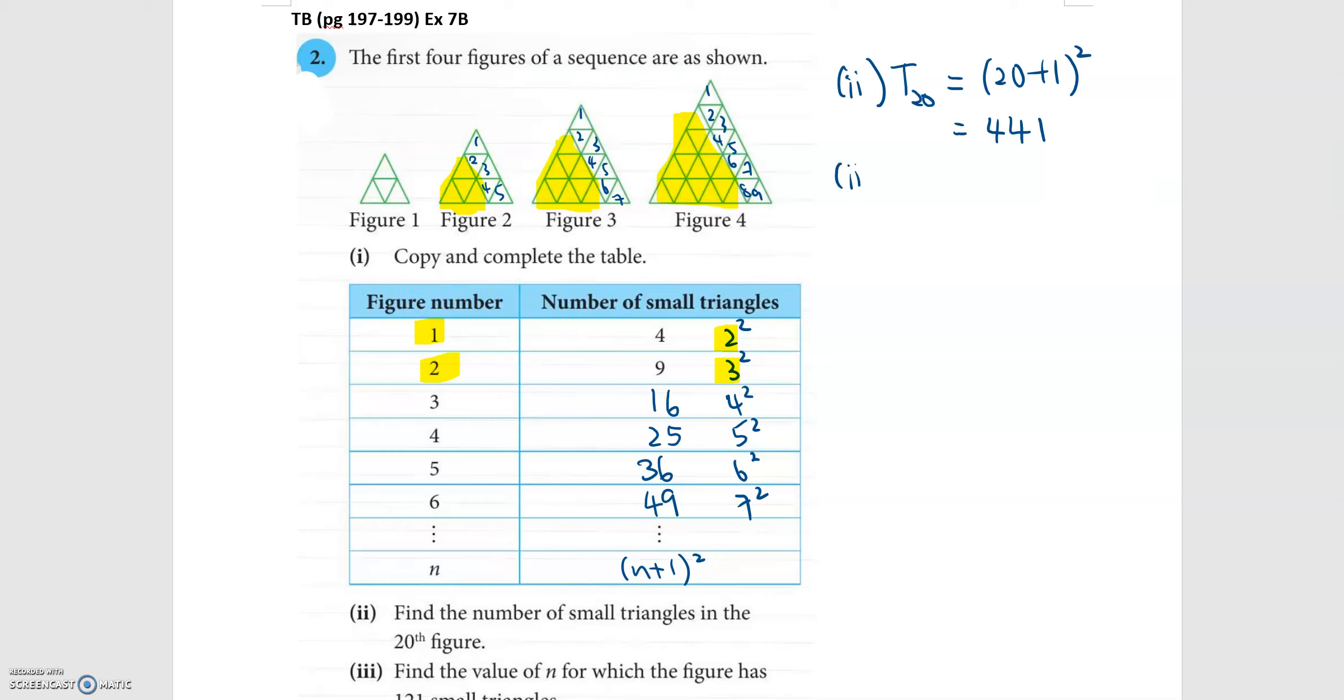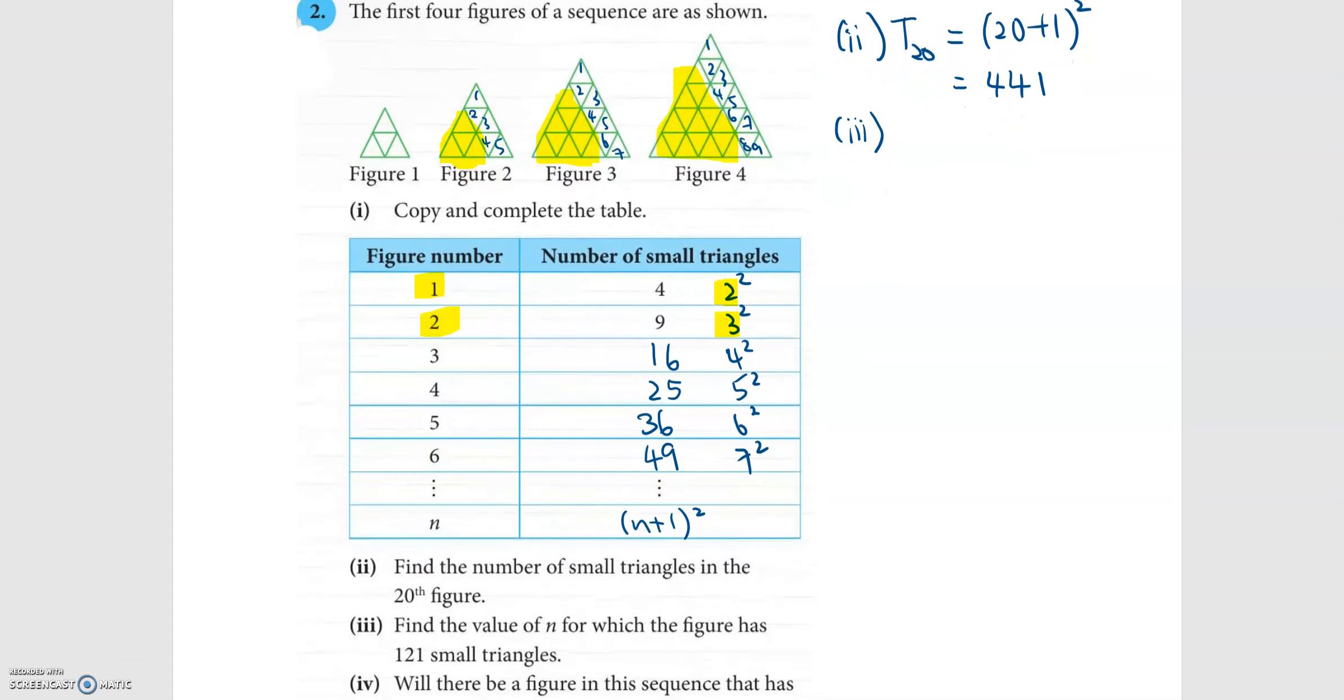Let's go on to part three. Part three wants us to find the value of n for which the figure has 121 small triangles. So T_n is n plus one squared and I know that I have 121. So if I were to solve for this, n plus one is 11. So n is 10. So the value of n for which the figure has 121 small triangles, it will be actually the tenth figure. So n is 10.